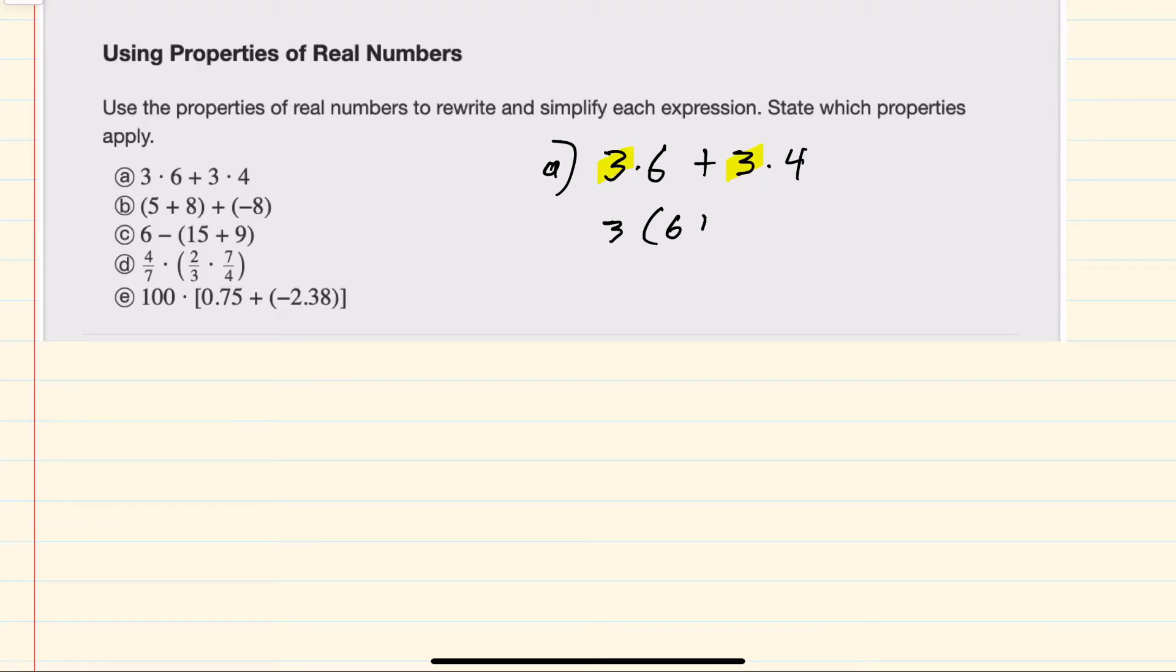and the 6 plus 4 inside the parentheses. And then from here, we can simplify to just being 3 times 10, which is 30 for our first expression.